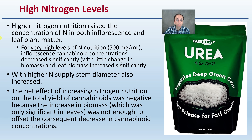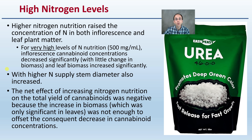Those high nitrogen levels raised nutrient concentrations in both the inflorescence — the flower — and the leaf plant matter. For very high levels of nitrogen nutrition, defined as 500 milligrams per milliliter, cannabinoid concentrations decreased significantly with little change in total biomass. Leaf biomass also increased quite a bit. With higher nitrogen supplied, stem diameter also increased — a sign of what growers might call nitrogen bloat in their plant.